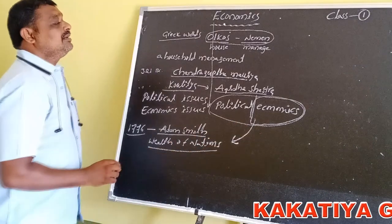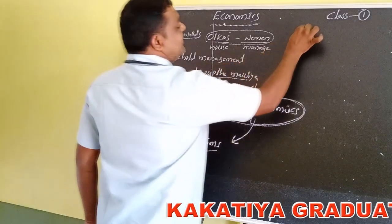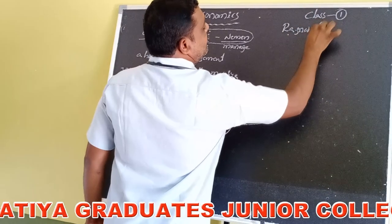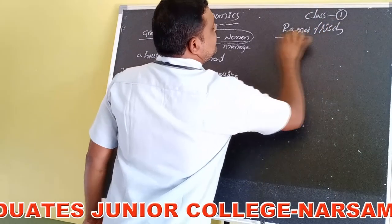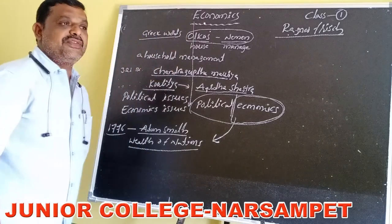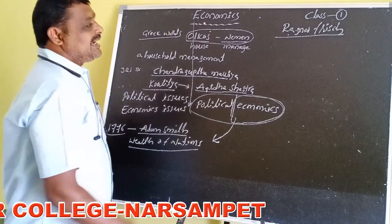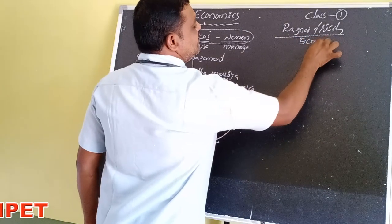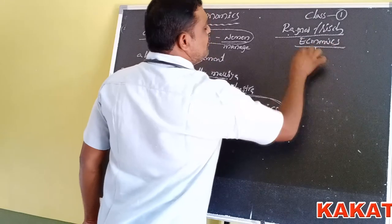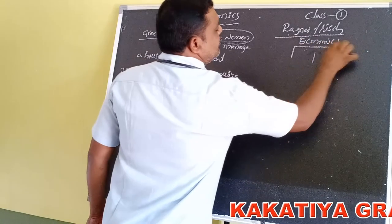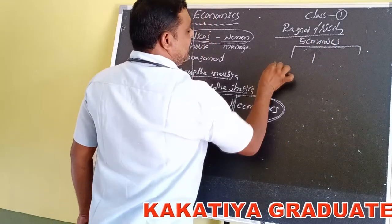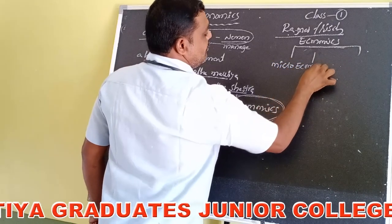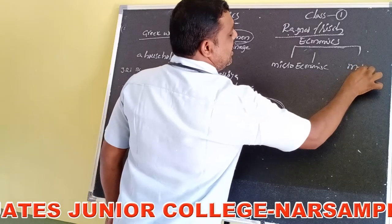And after that, Ragnar Frisch, a professor at the University of Oslo in the country of Norway, divided economics into two parts: microeconomics and macroeconomics.